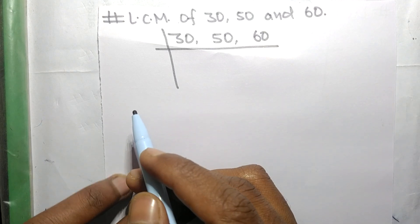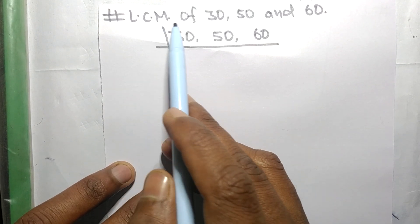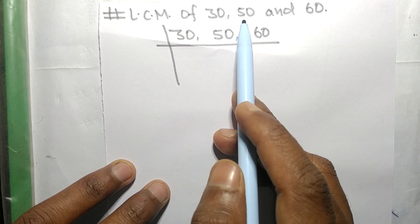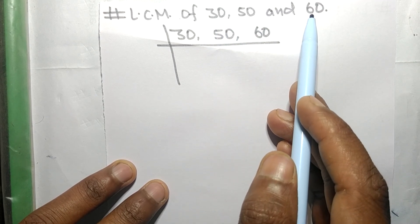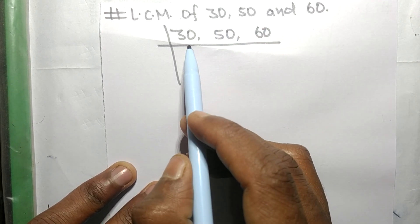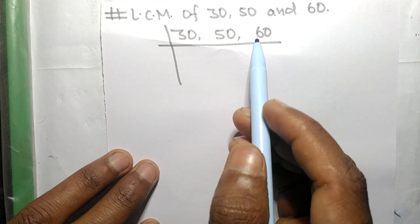So today in this video we shall find LCM of 30, 50, and 60. These all numbers are exactly divisible by 2.